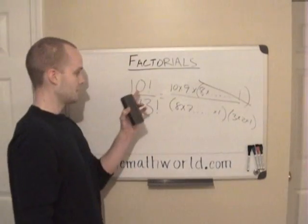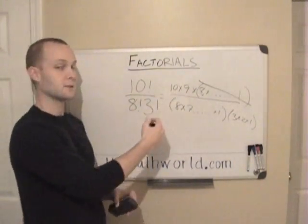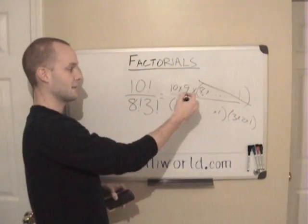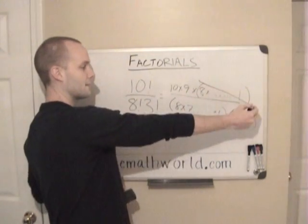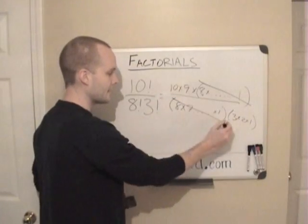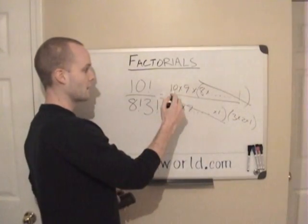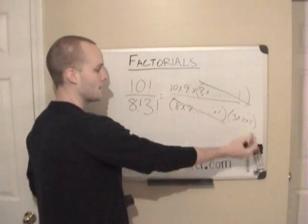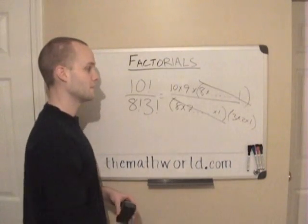Since it's all being multiplied, we can cancel out 10 factorial has 8 factorial already in it times 9 times 10. So we can cancel out the 8 factorial and the 8 factorial. And what we're left with is 10 times 9 on top and 3 times 2 on the bottom.